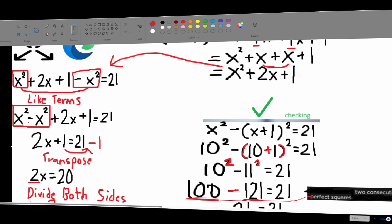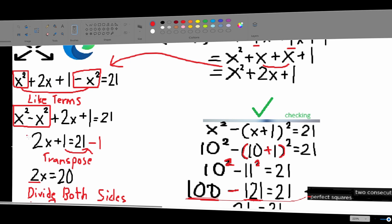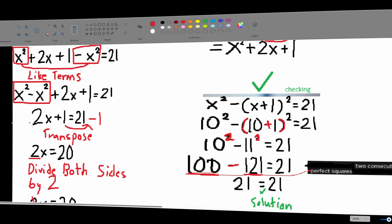Our like terms are x squared and negative x squared. So, when we move them here, we are now able to subtract them. x squared minus x squared is 0. So we just remove that.